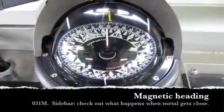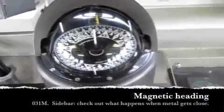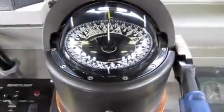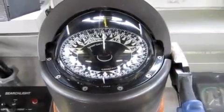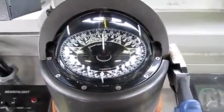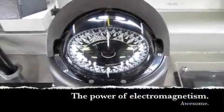As a sidebar, check out what happens if you put a pair of metal pliers next to a magnetic compass. That's about a 10 degree change. So that gives you an idea of how sensitive those magnetic compasses are for cell phones or wiring.